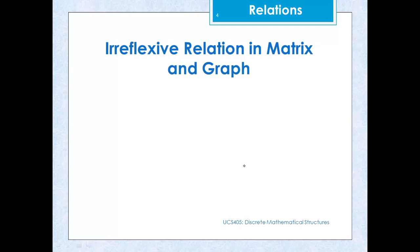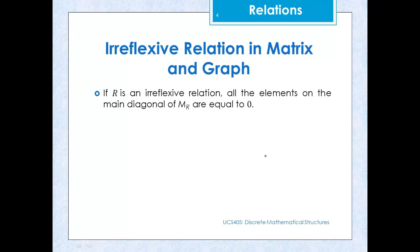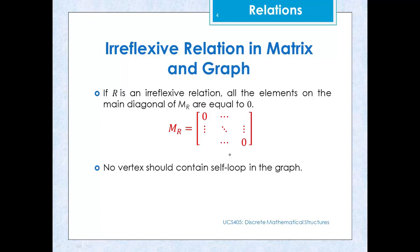To represent irreflexive relations using a matrix, all the diagonal elements of the matrix should be equal to 0, meaning no ordered pairs of type (x,x) are present. For a graph representation, there should be no self-loop on any of the nodes. If there is a node x, there should be no self-loop on that node, and similarly for all other nodes.